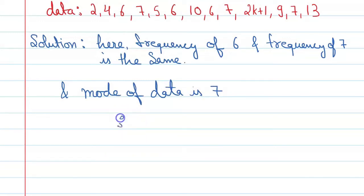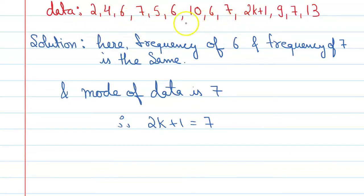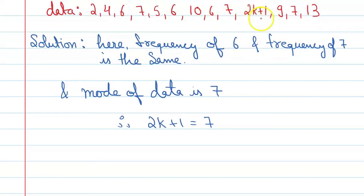Therefore, we can say 2k plus 1 is equal to 7. The frequency of 6 and 7 is currently the same. Since the mode must be 7, we need the frequency of 7 to be more than 6. So we consider 2k plus 1 equal to 7 to add another occurrence of 7 to the data.